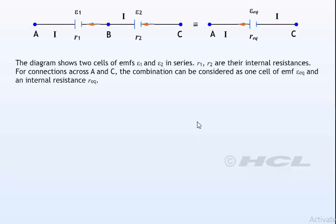Two cells of EMFs E1 and E2 in series, R1 and R2 are their internal resistances. For connections across A and C, the combination can be considered as one cell of EMF E equivalent and an internal resistance R equivalent.